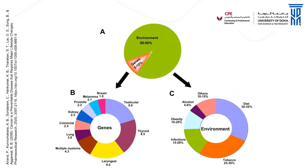Let's look at the contribution of different factors to cancer formation. The genetic predisposition to cancer is much less than you would expect compared to other factors. Certain cancers have a higher risk due to genetic factors — these include testicular cancer, breast cancer, kidney cancer, and lung cancer. However, the vast majority of cancers are formed due to environmental factors, which include diet as a major contributory factor. It also includes tobacco use, smoking, alcohol, and the state of obesity, which is an independent risk factor for cancer formation.